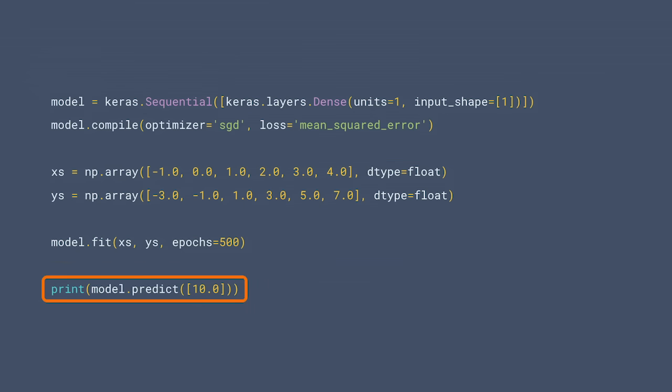When it's done, we'll have a trained model. So now you can try to predict a y value for a given x. What do you think would happen if you try this line of code? Predict the y when x equals 10. You might think that the answer is 19, right? But it isn't. It's actually something like 18.9998. It's close to 19, but it's not quite there. Why do you think that would be?